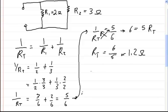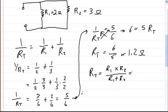If you want to use the other formula, which you can only use for two resistors in parallel, it's R1 times R2 divided by R1 plus R2. So that's 2 times 3 divided by 2 plus 3, which equals 6 over 5 — the same answer. So that works out.